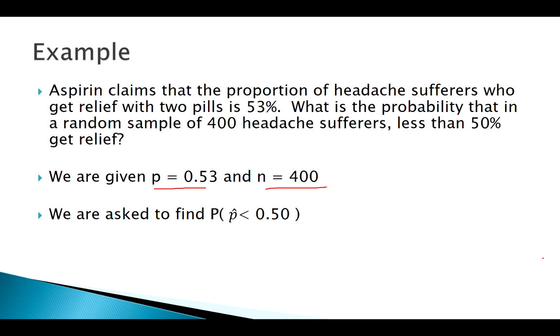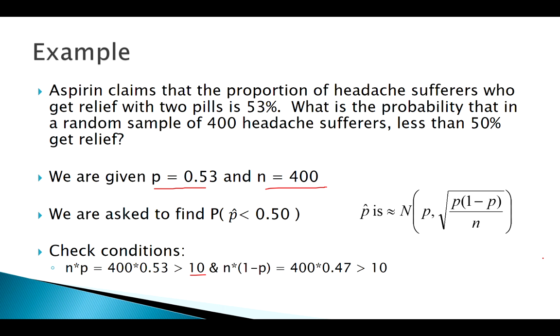So really, the first thing I should do is check my conditions, make sure things check out. 400 times 0.53, that's going to be somewhere a little above 200, definitely more than 10. 400 times 0.47, a little below 200, we're in good shape. So we can assume that we have this distribution.